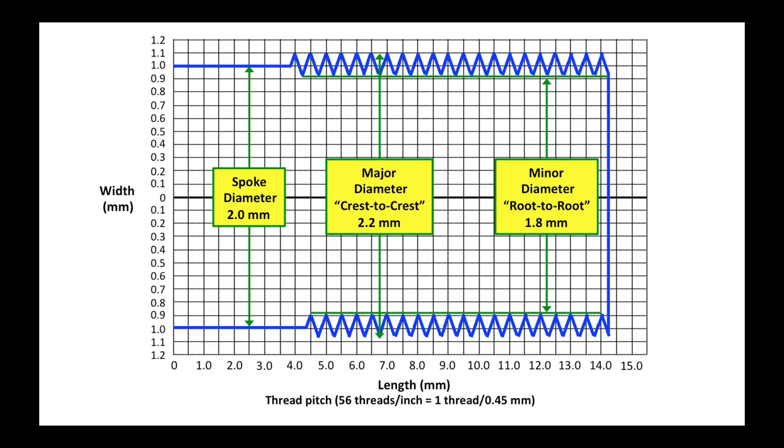This is a drawn to scale image of a 2mm spoke with rolled threads. The major diameter crest to crest is 2.2mm, and the minor diameter root to root is 1.8mm.